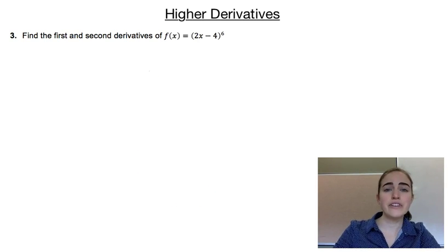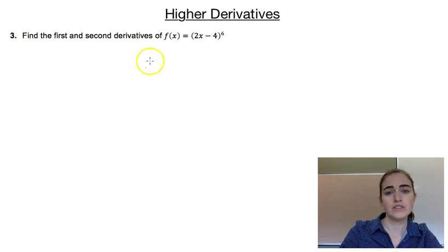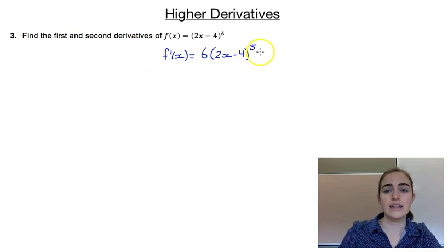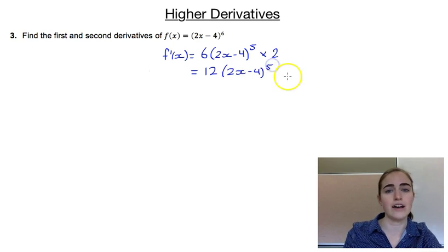Our last example asks us to find the first and second derivatives of f of x equals 2x minus 4, all to the power of 6. This one we're going to have to use the chain rule. So if we differentiate, we'd bring the 6 up front — differentiating the outside and leaving the inside as it is — so that becomes the power of 5, then multiplying by the derivative of the inside, which would just be 2. So we would have 12 times 2x minus 4 to the power of 5.